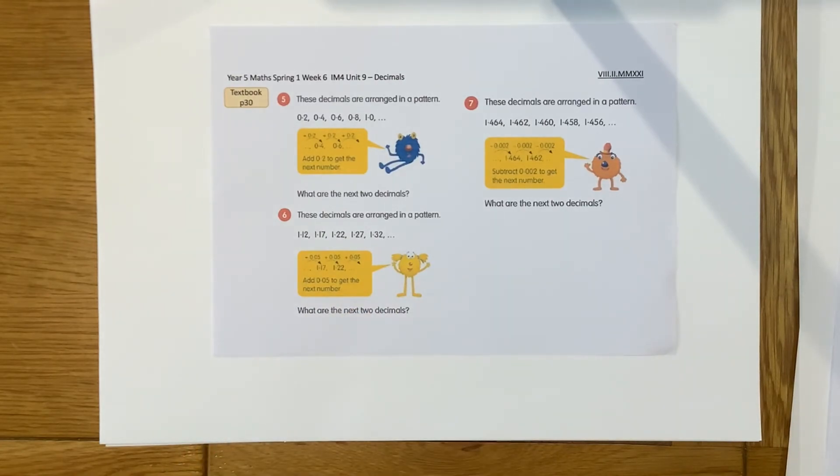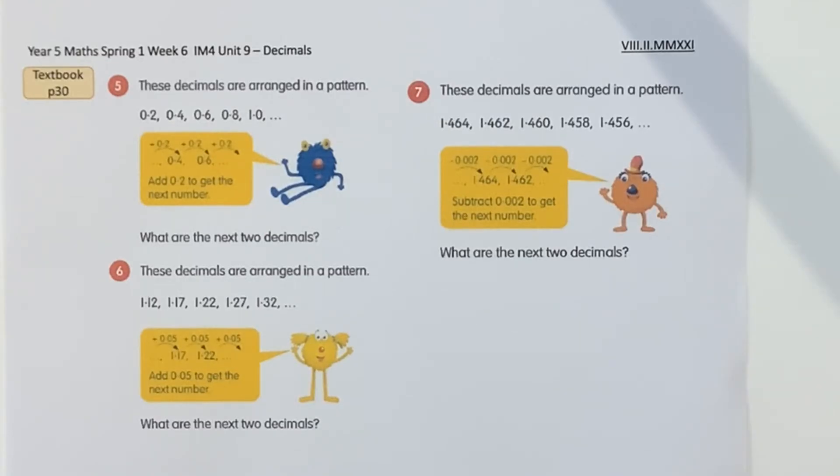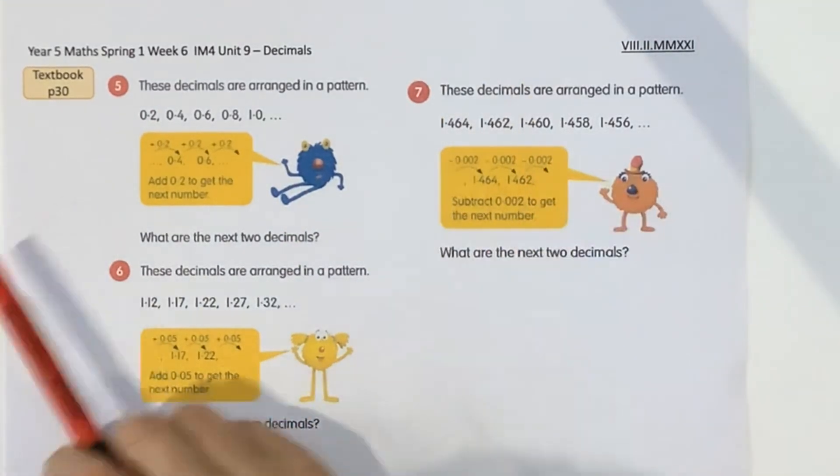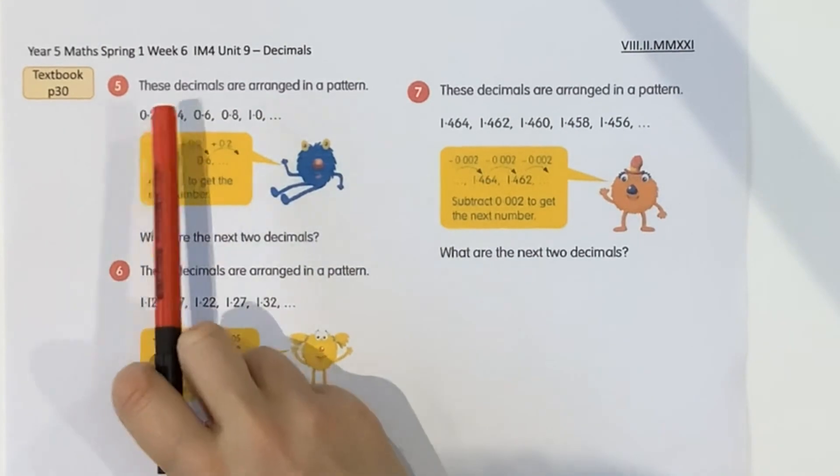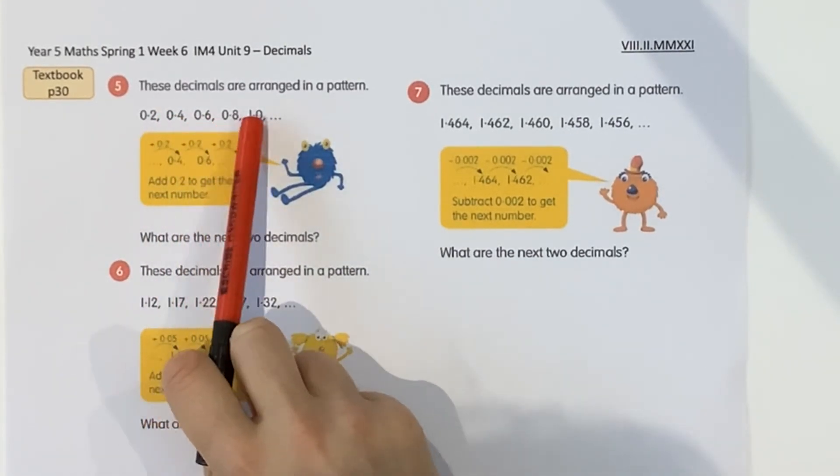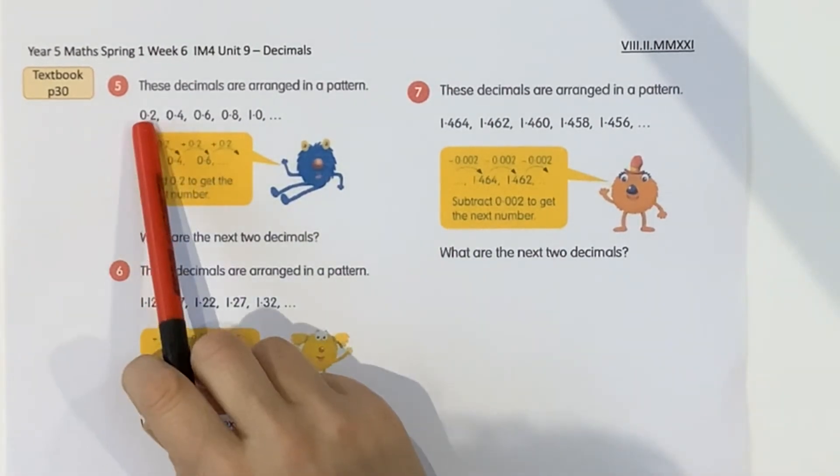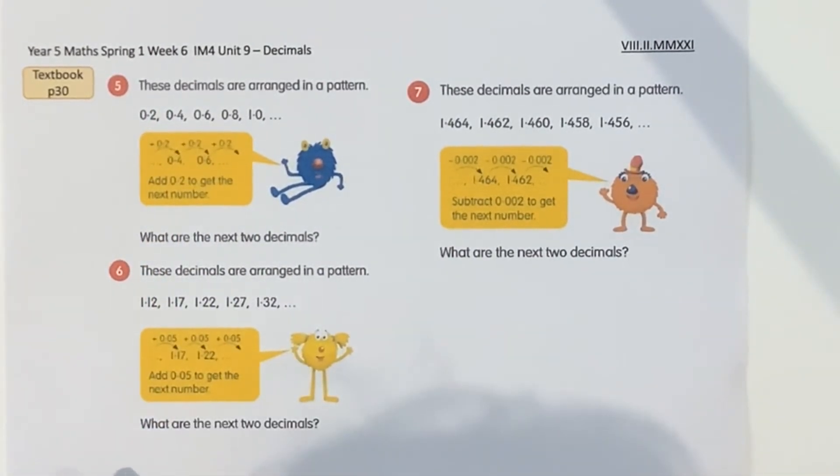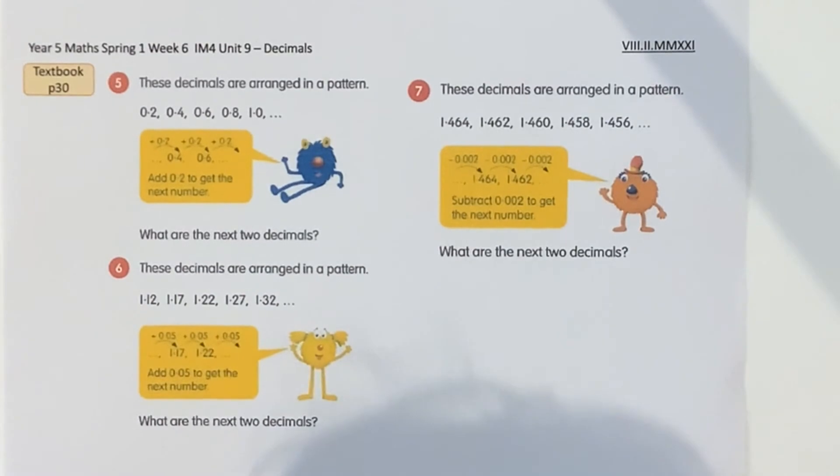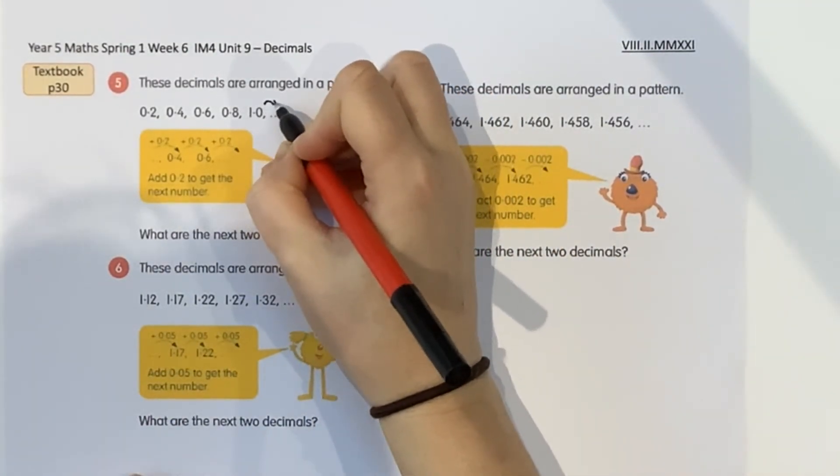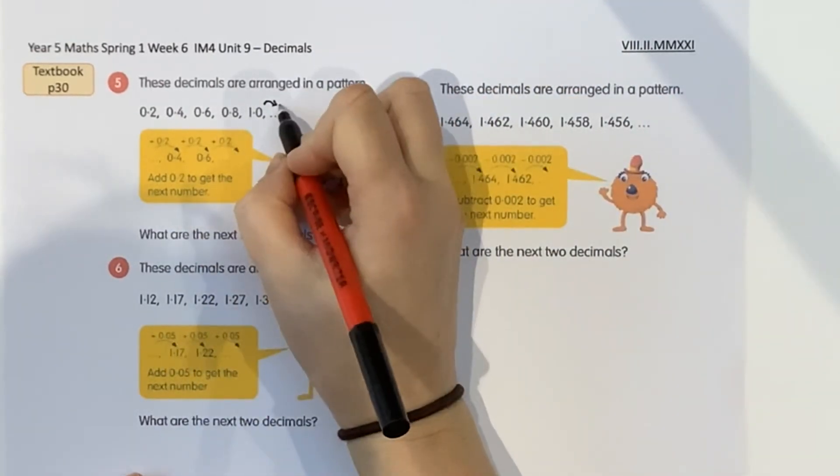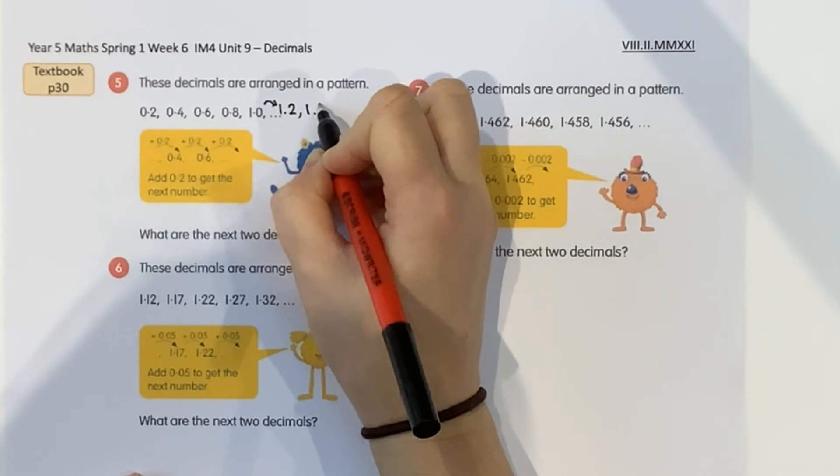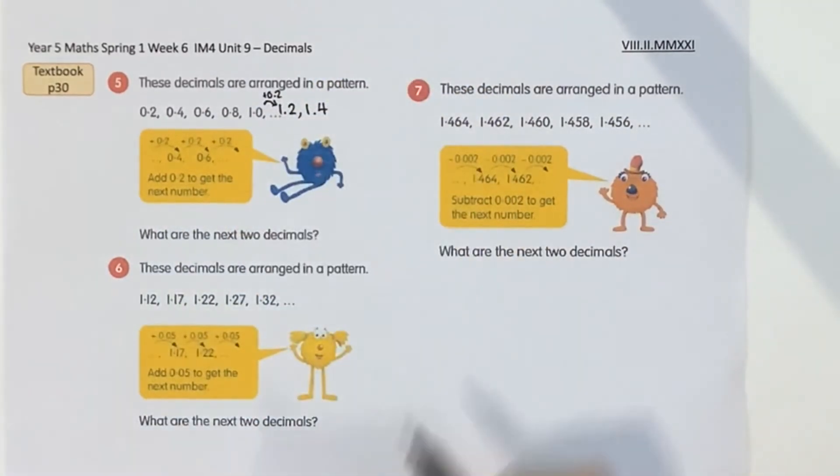Okay, number 5. So what we're doing now is we're looking at putting some decimals into a number sequence. So if we have a look here, we've got 0.2, 0.4, 0.6, 0.8, 1.0. So what we're doing each time is we're adding on two tenths or 0.2. So the pattern is we add 0.2 to get to the next number. What are the next two decimals? Can you have a think? What would come next? Okay, hopefully you said that if we keep on adding 0.2 on and again, I could build one and then add two tenths on each time. We should have 1.2 and 1.4.